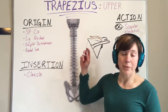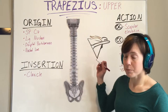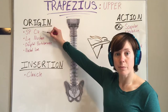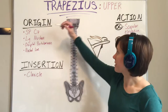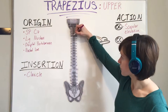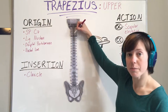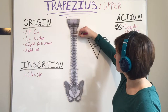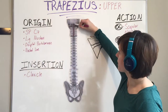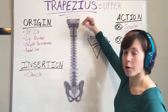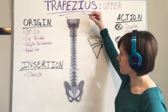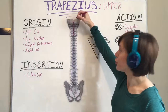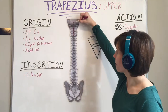The origin of the upper trapezius is the spinous process of C7, the ligamentum nuchae, which is the ligament that covers the spinous processes of all the cervical vertebrae, the occipital protuberance, and the nuchal line.